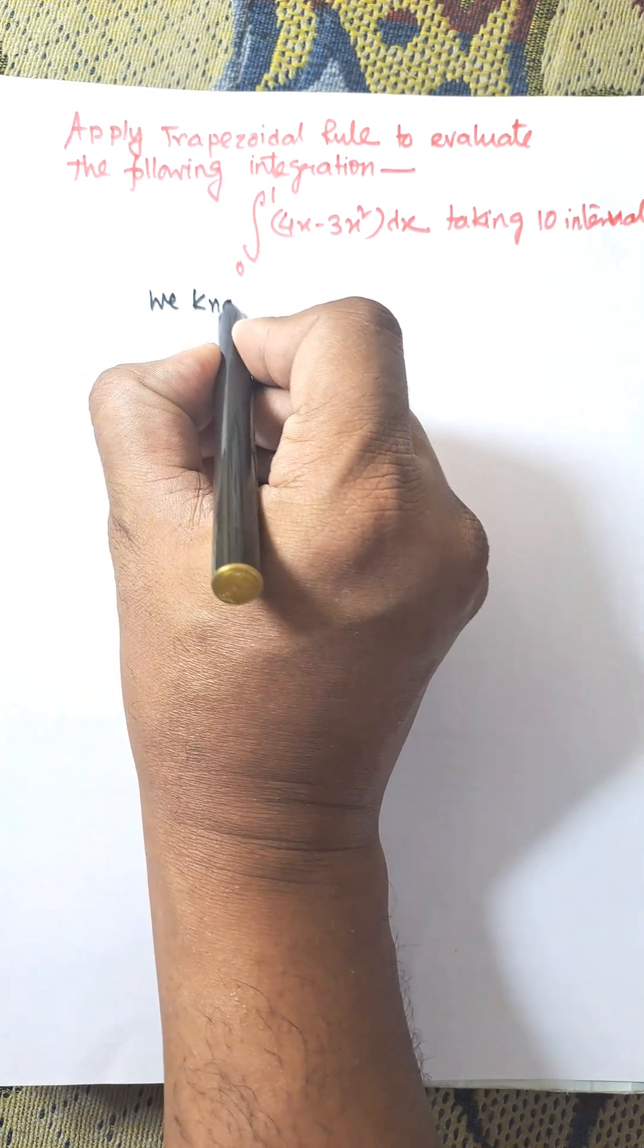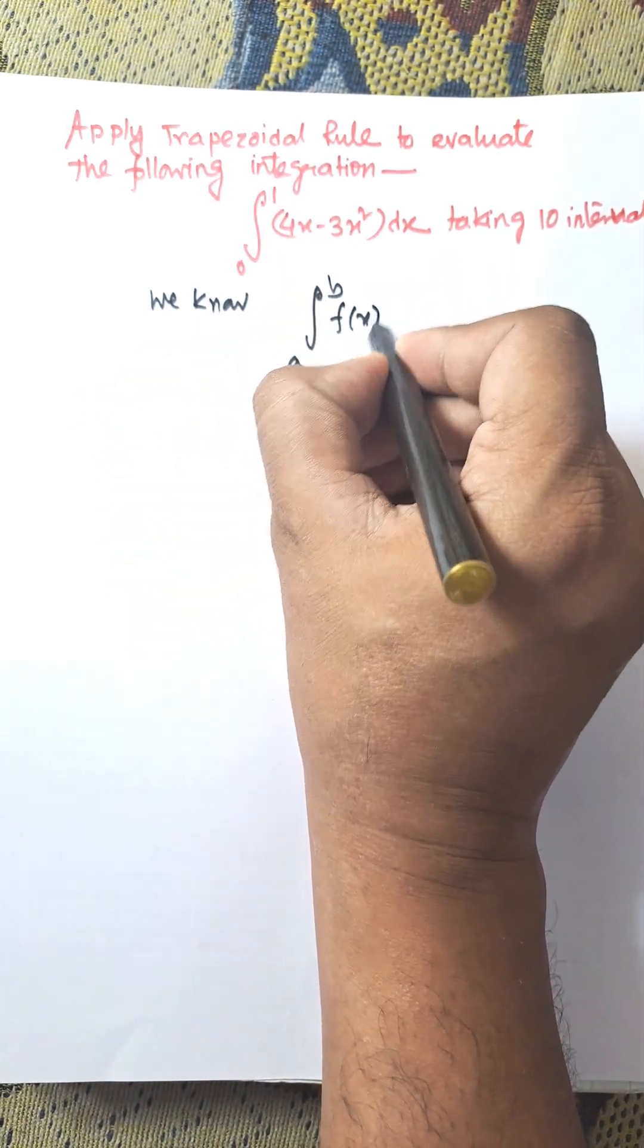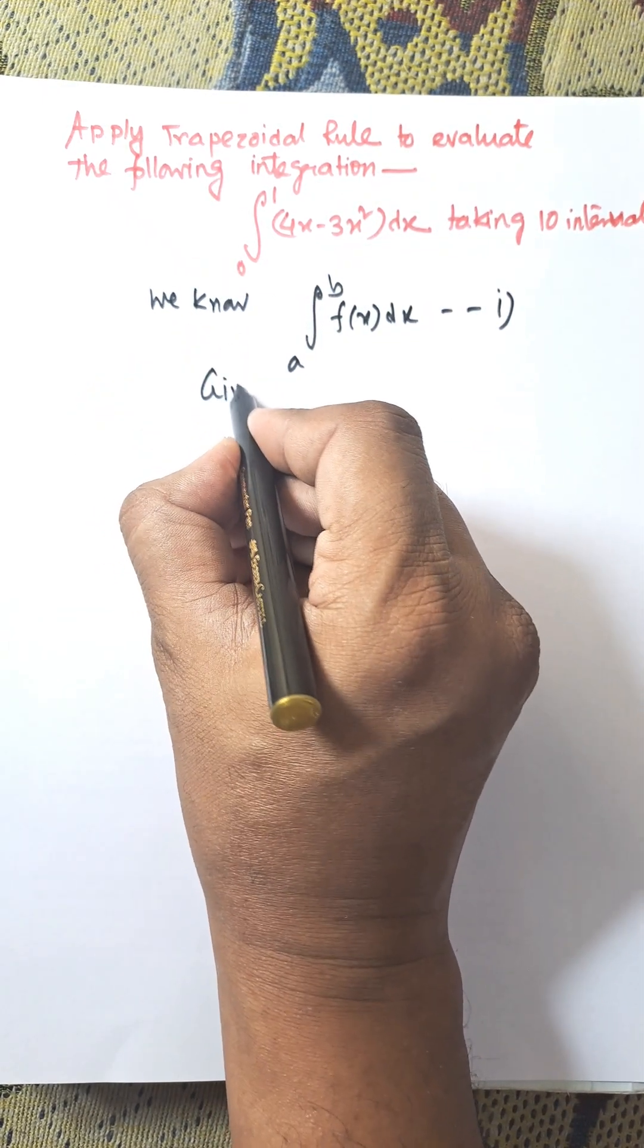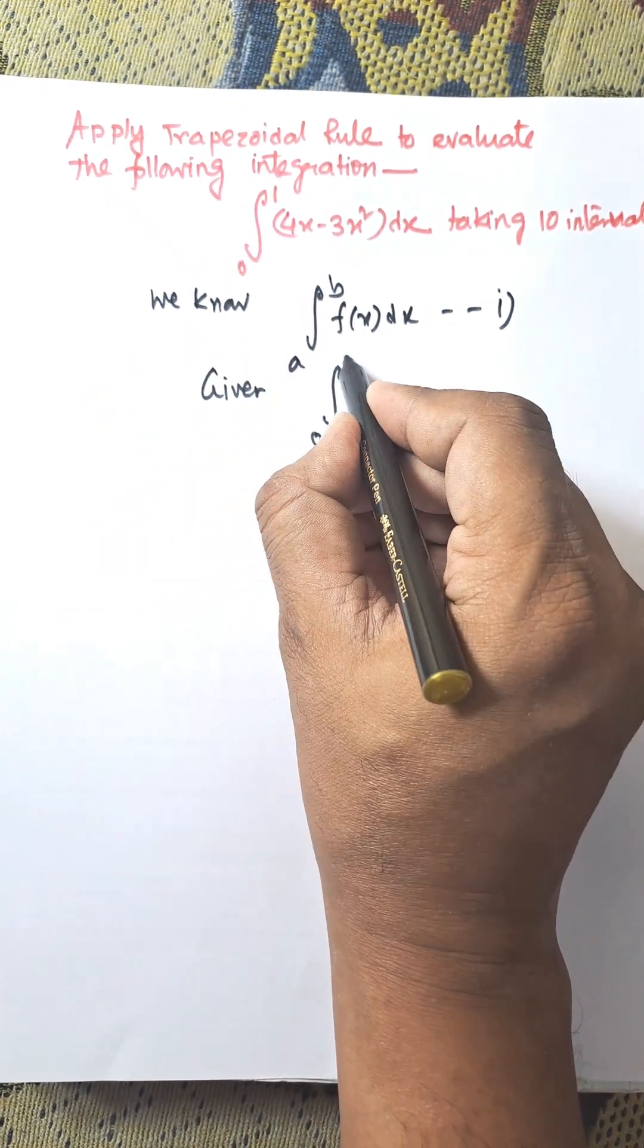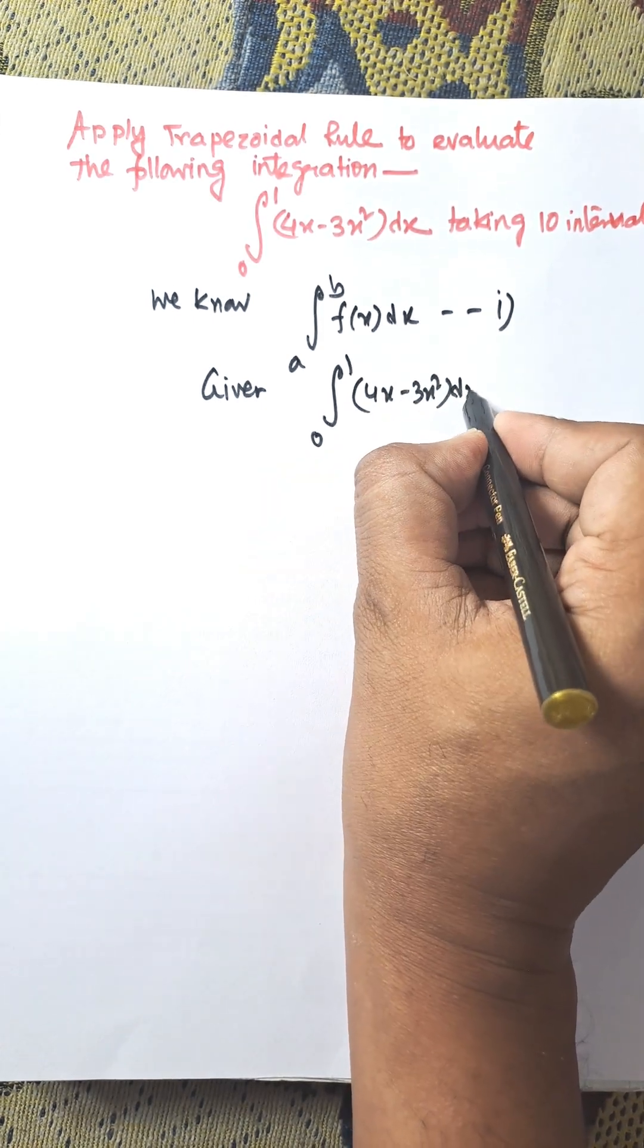We know the integral from a to b of f(x)dx, where a is the lower limit and b is the upper limit, and this is considered as equation one. Given here is the integral from 0 to 1 of (4x - 3x²)dx, and this is considered as equation two.